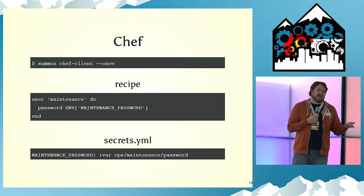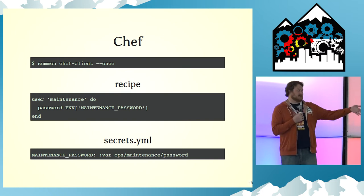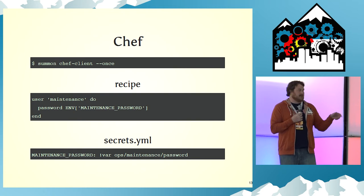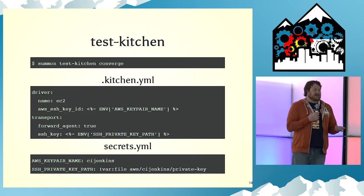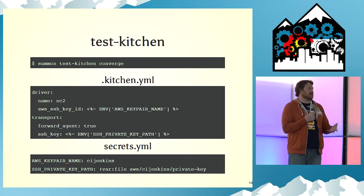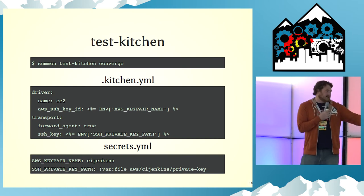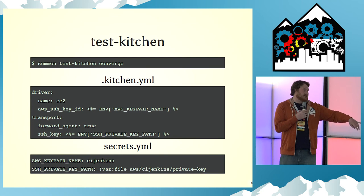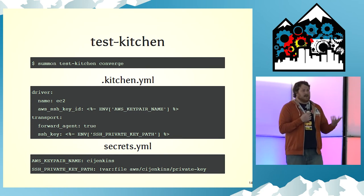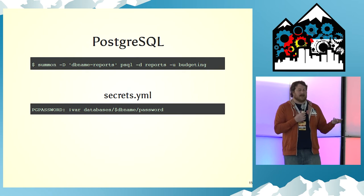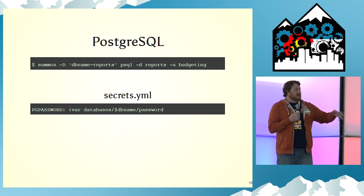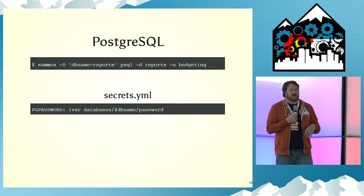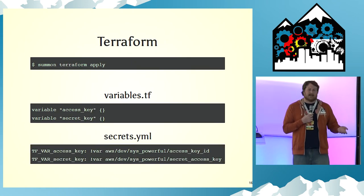I use it with Chef because I really hate working with the data bag API — I just Summon my secrets in there and then I can use Ruby's ENV to grab them. I use it with Test Kitchen to test my infrastructure code. The var file in secrets.yaml resolves the private key into a memory-mapped file, and the value of that environment variable is the path to that file. I also discovered I can use it with Postgres — I can Summon the Postgres password, drop into the PSQL prompt, mess around, and when I exit, the passwords aren't left on my system.